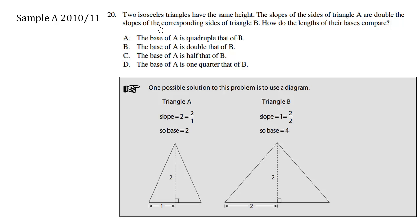Two isosceles triangles have the same height. The slopes of the sides of triangle A are double the slopes of the corresponding sides of triangle B. So we see here that the slope of triangle A is twice as steep as triangle B.